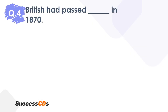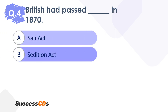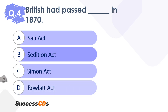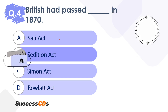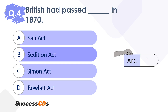Moving to question 4. The British had passed dash in 1870. Let's have a look at the options: is it the Sati Act, the Sedition Act, the Simon Act, or the Rowlatt Act? Your time begins now. Quickly tell me which of these Acts was passed in the year 1870 by the Britishers. This type of question is very important in your SST. The correct answer is the Sedition Act — option B. This is a very important chapter, so if you have missed the explanation video, please watch it if you have any doubts.